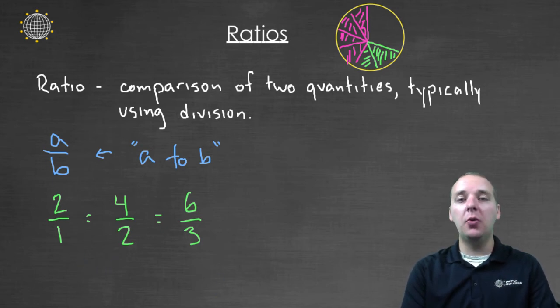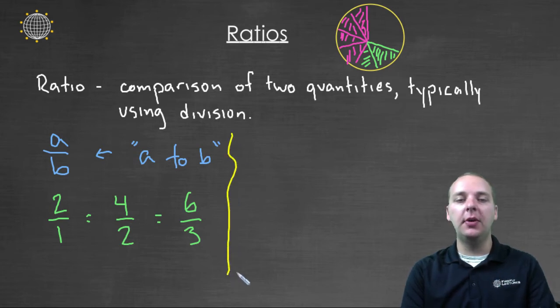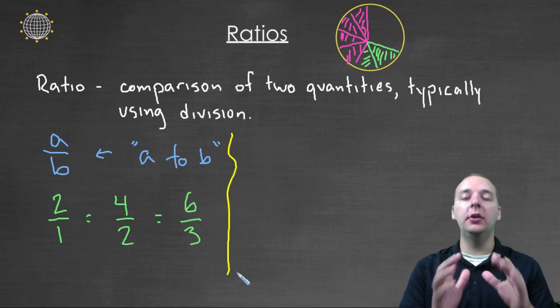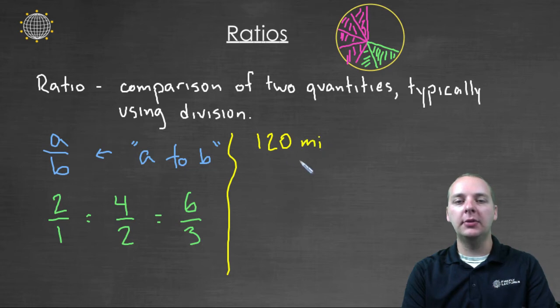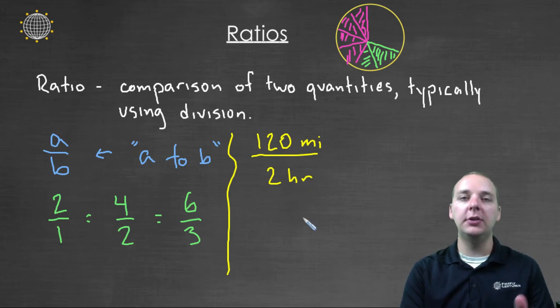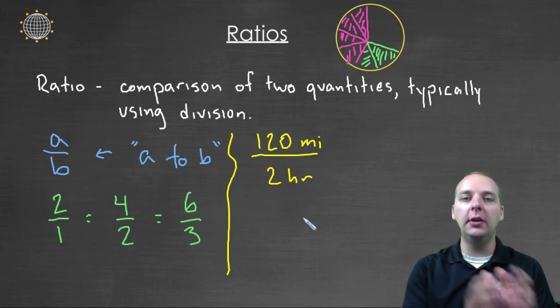And we can even compare quantities that don't even have the same units. For example, if we were in a car, and we went a total of a hundred and twenty miles on a trip, and it took us two hours to go that far. So we could make a ratio out of that. We could say a hundred and twenty miles, compared to the two hours that it took us on that trip. So the ratio is a hundred and twenty to two.